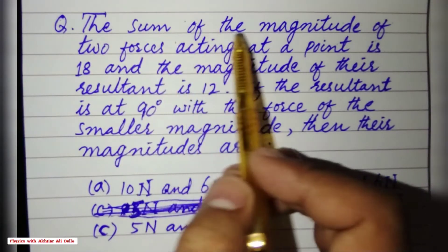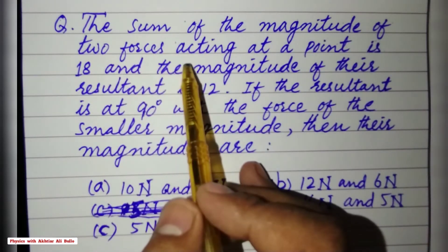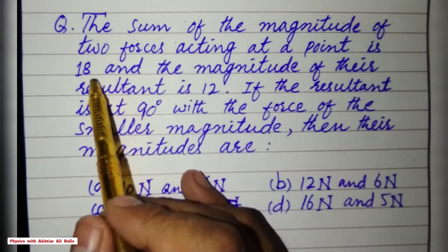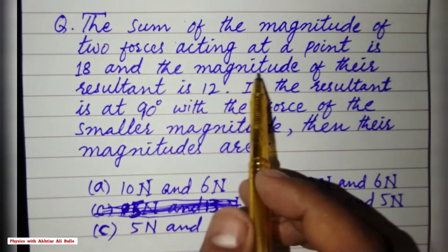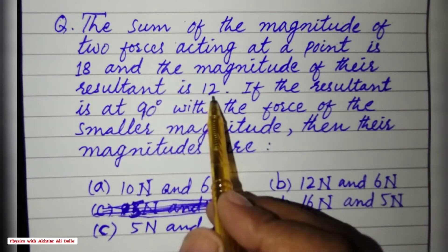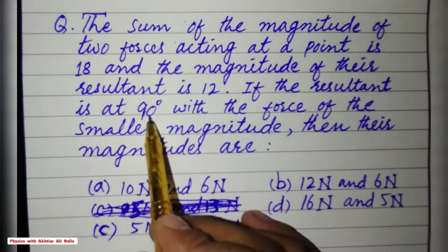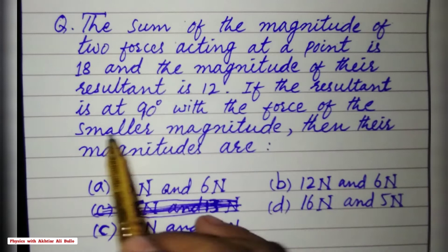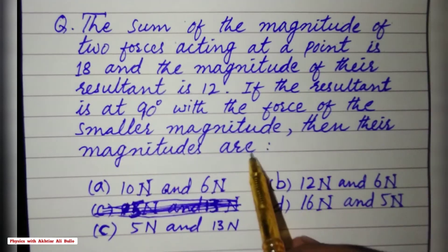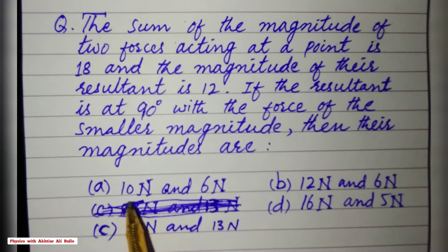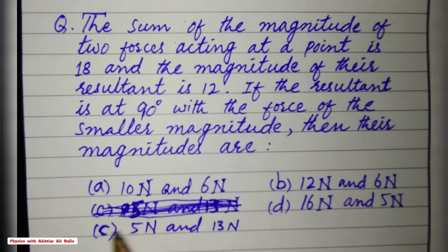The sum of the magnitudes of two forces acting at a point is 18, and the magnitude of the resultant is 12. If the resultant is at 90 degrees with the force of the smaller magnitude, then their magnitudes are: (a) 10N and 6N, (b) 12N and 6N, (c) 5N and 13N, (d) 16N and 5N.